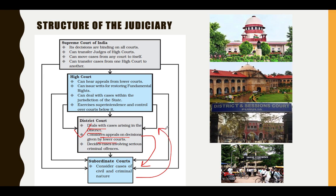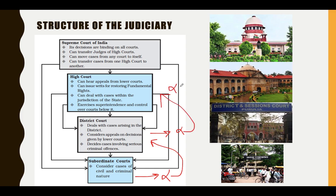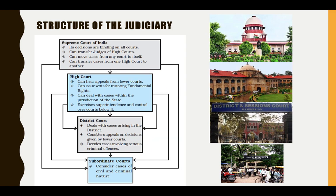The High Court considers appeals on decisions made by lower courts — the subordinate courts. You appeal from the subordinate court to the district court. If you lose at the subordinate court level, you can challenge it at the district court. The district court also decides cases involving serious criminal offenses.